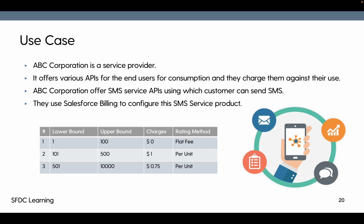Here is the pricing example for the SMS service API. For 1 to 100 API calls, there is no charge — flat fee of zero. For 101 to 500 API calls, the charge is $1 per unit. For 501 to 10,000 API calls, the charge is $0.75 per unit.